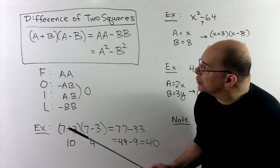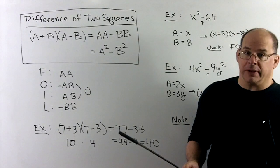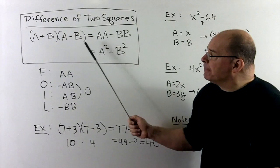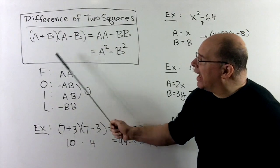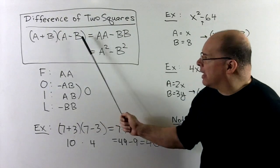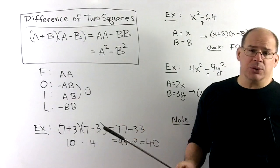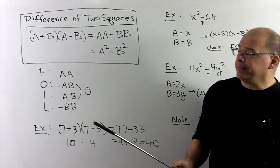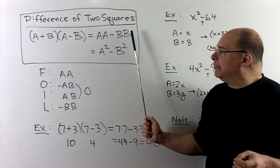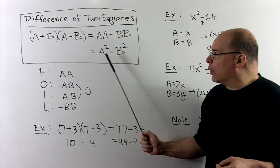Our first special case is the difference of two squares — we'll use this case often. We have (a + b)(a − b), where a and b are the first and last terms, and the difference between the two factors is the plus/minus. If we don't have the plus/minus, we can't apply difference of two squares. This gives us aa − bb, or written as a² − b².